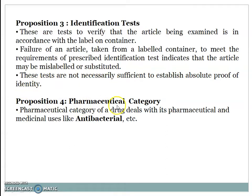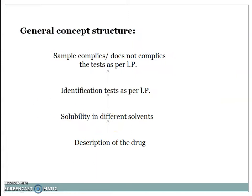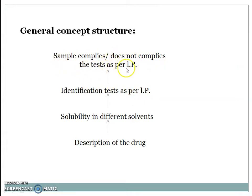Proposition 4 — Pharmaceutical Category: the pharmaceutical category of the drug deals with its pharmaceutical and medicinal uses, such as antibacterial. The general concept structure for an identification test is: first perform the description, then perform solubilities in different solvents, then perform the identification test as per IP. The result may be that the sample complies or does not comply with the test as per IP.